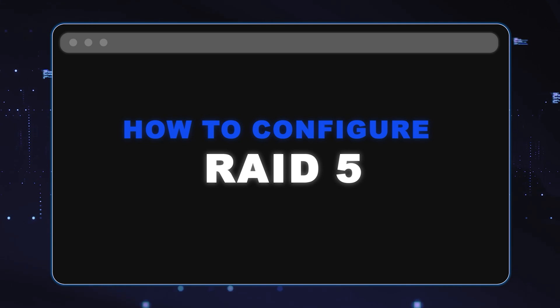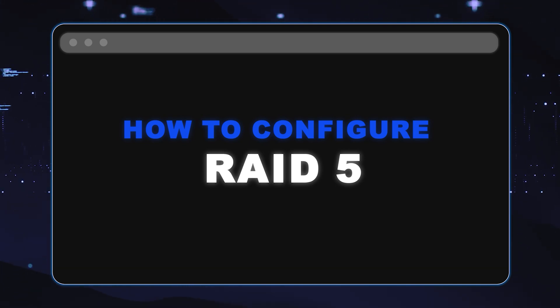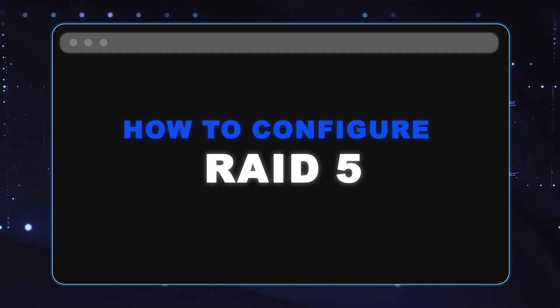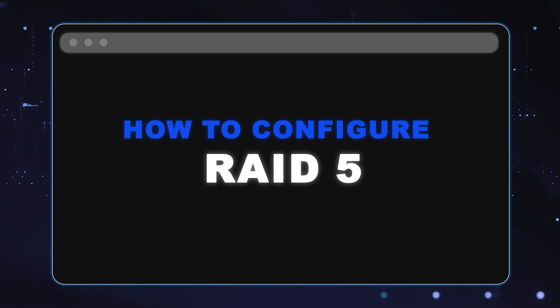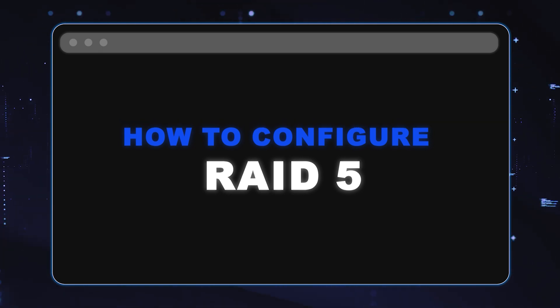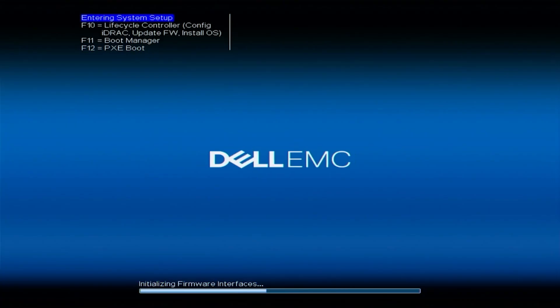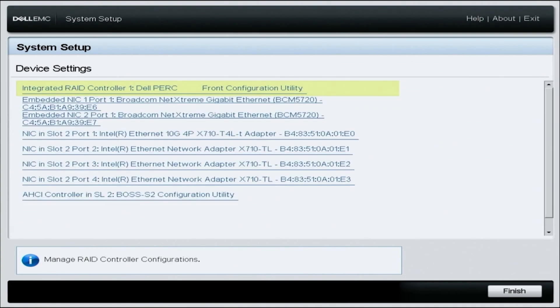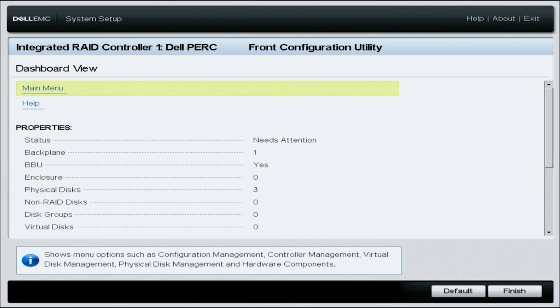Now we're going to show you step-by-step instructions on how to configure RAID 5 with your 15th gen server. RAID 5 is one of the most common configurations — it requires a minimum of three hard drives. Make sure your controller supports RAID 5. During POST, press F2 to get to system setup. Once in system setup, go to device settings, where you'll find the hardware installed in your server, and select your desired RAID controller. Then select main menu.